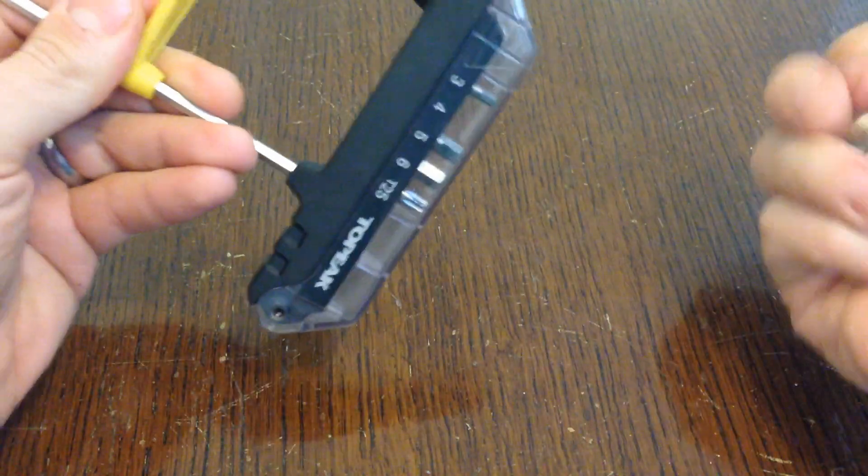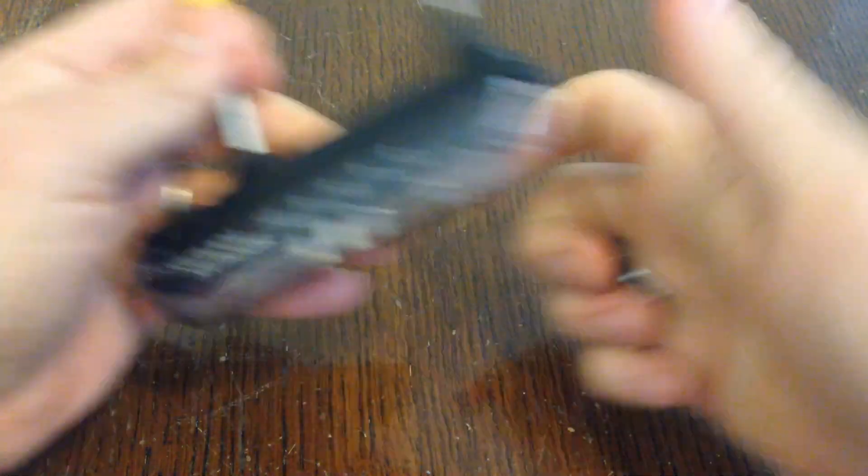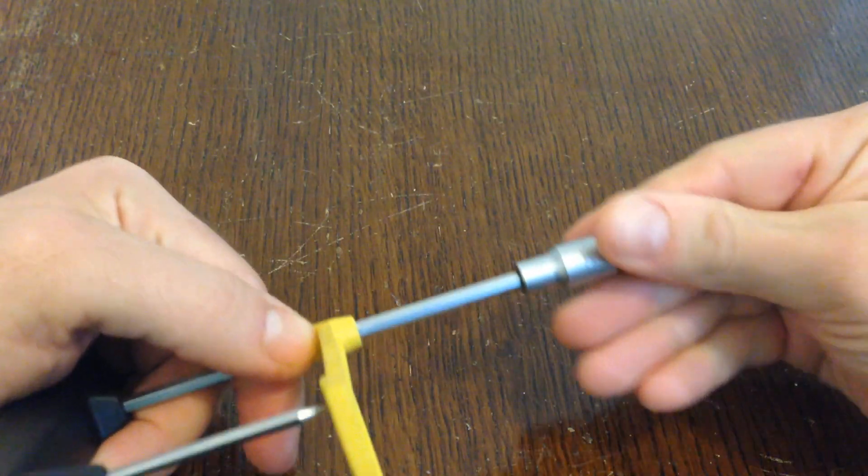It comes with a nice cover so you don't hurt your hand when you're using a torque wrench. And the bit just goes in the bottom there.